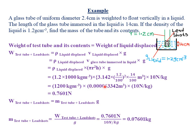The volume is 0.000063342 m³ — correct to five significant figures, since zeros to the left of a number are not significant; zero is only significant when it exists between two non-zero digits or to the right of a number. Multiplying: 1200 × 0.000063342 × 10 gives a weight of 0.7601 N, correct to four significant figures.